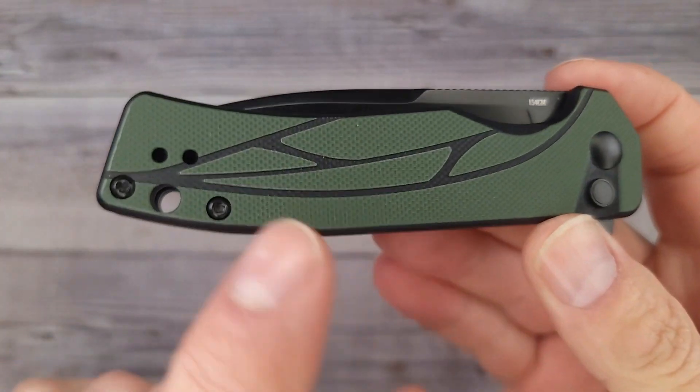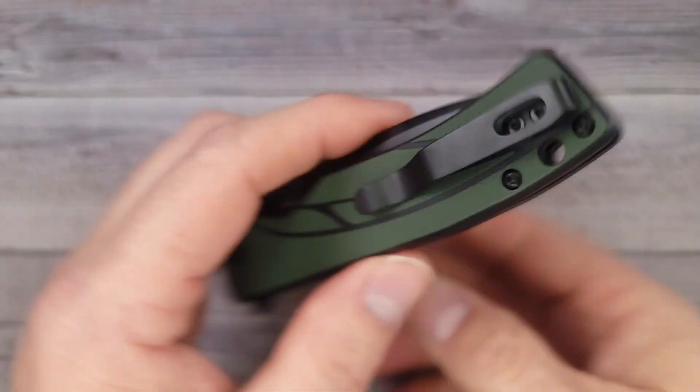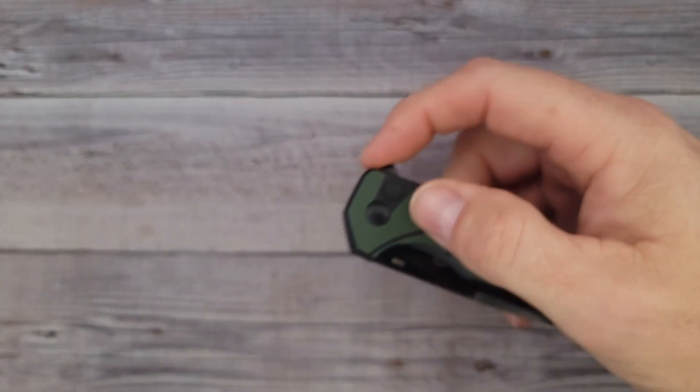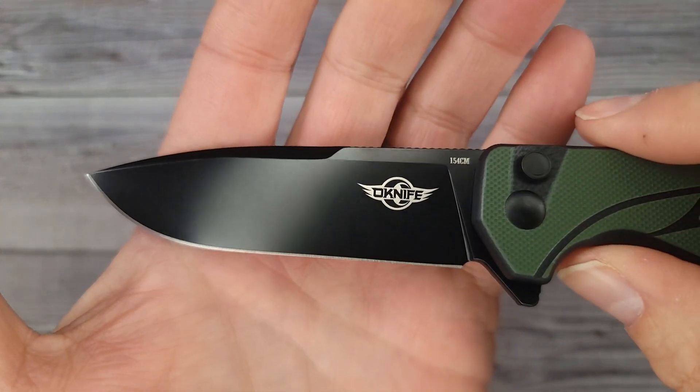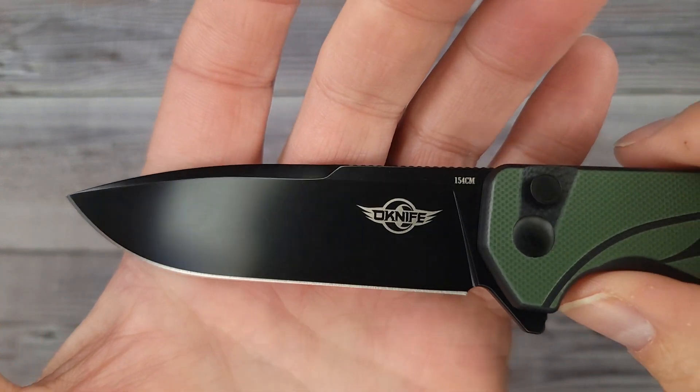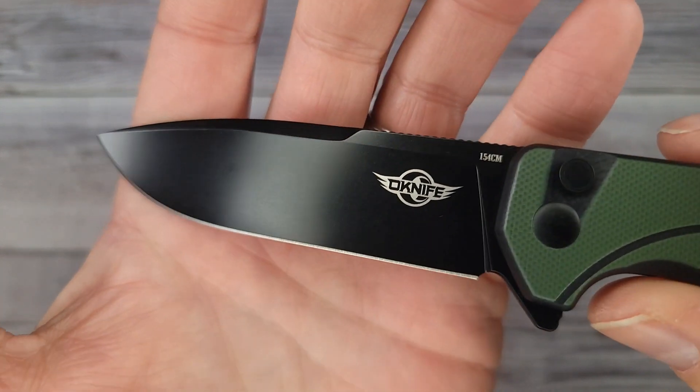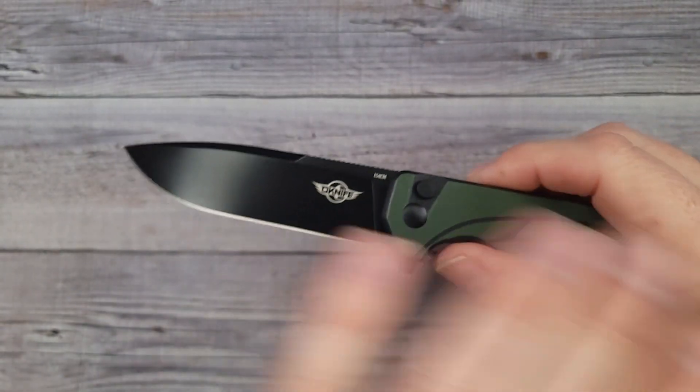This one is the Metal, another classic. This is an ambidextrous knife - it is ambidextrous as far as you can reverse the clip. Look at this - pow right in the kisser! Check out that blade shape, that is classic. 154CM blade steel.